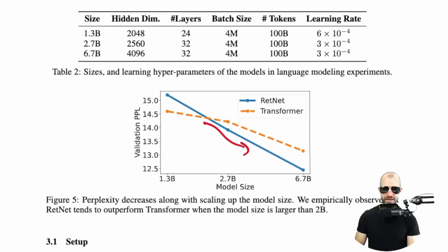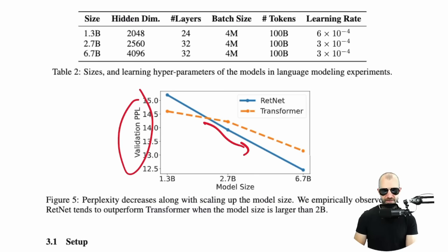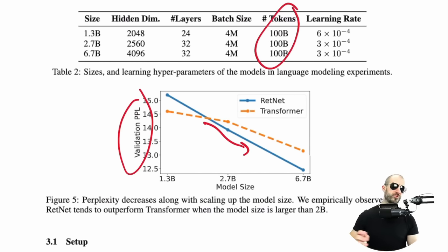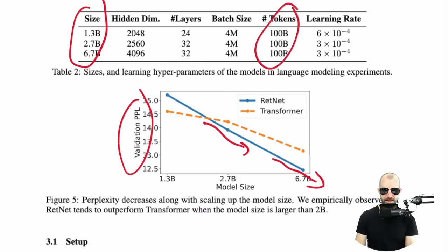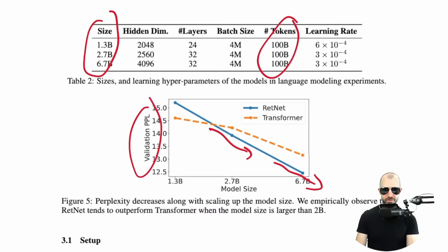RetNet scales better experimentally. This is language model validation perplexity — not some contrived task — which makes me feel these experiments are valid. Although the number of tokens here is not llama-style 2 trillion tokens, and the model sizes are sizable but not the biggest we've seen. So it's interesting to see whether this will keep scaling with model size and token count. The first experiments look promising.